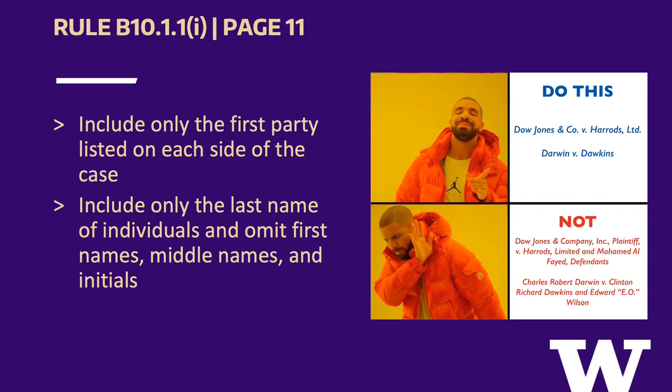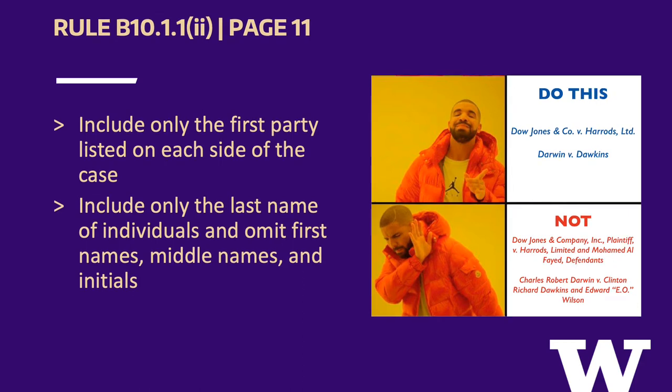Wilson from the right side of the v. Rule B10.1.1(II) requires that only the last name of an individual party be included. As a result, in the second example, Charles Roberts and Clinton Richard were dropped.